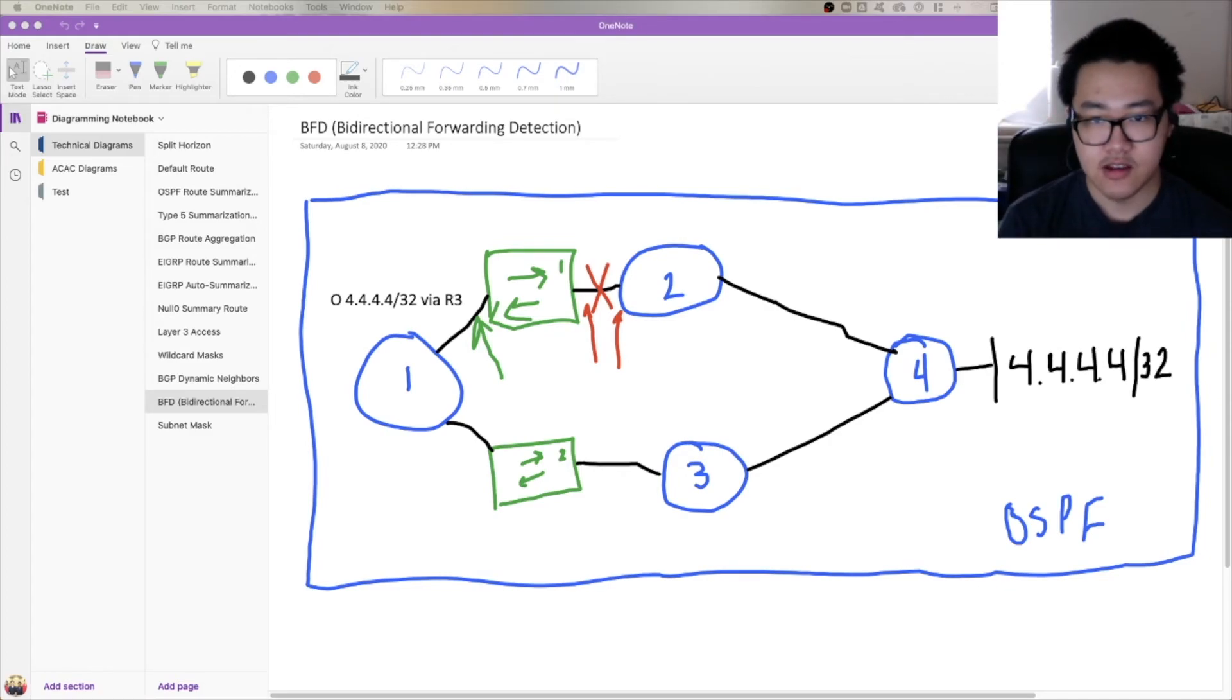But that being said, BFD can work much, much faster. Instead of 200 milliseconds hello and one second hold, we have 50 millisecond hello and 150 millisecond holds. And that's going to help us to bring down the adjacency much faster and reconverge, again, much faster.